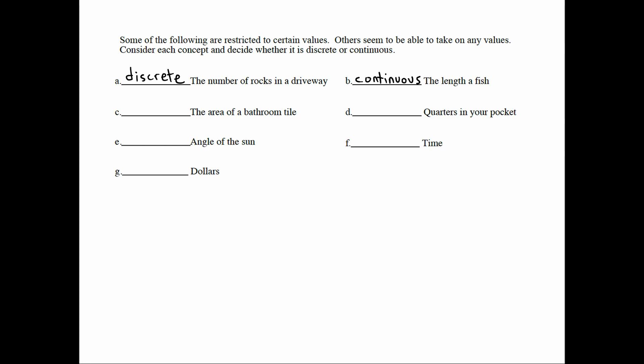When it comes to the area of a bathroom tile, the area of a rectangle is a product of length times width. And since length and width are both continuous, meaning they could be anything, the area can be anything, too. So it's continuous as well. When it comes to quarters in your pocket, a fraction of a quarter doesn't make sense. And quarters are discrete.